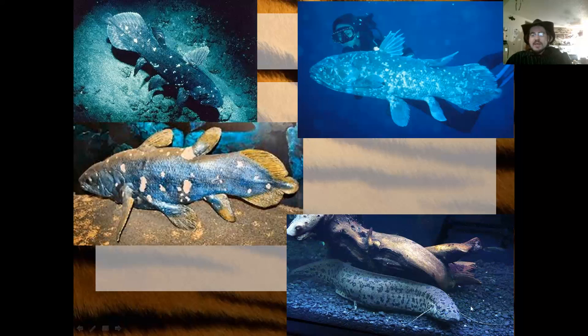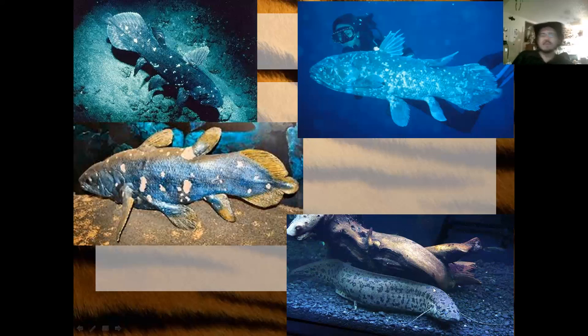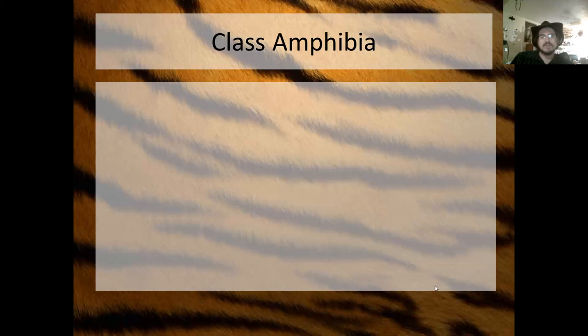Down here at the bottom right is somebody's captive African lungfish — also a lobe-finned fish. African lungfish actually have specialized structures for breathing air, which is pretty cool.